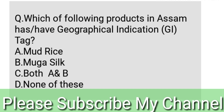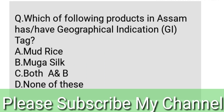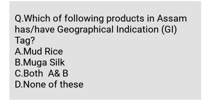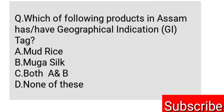Which of the following products of Assam have geographical indication tag? Option A: Madras. Option B: Muga Silk. Option C: Both A and B. Option D: None of these. Yahudhaa tartu hol C — Both A and B. Assam's Madras aro Muga Silk dho GI tag paise. Aro recently, Assam's Gamusha yo GI tag probably declare kori se.